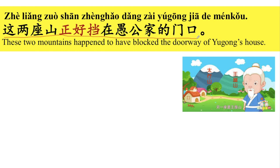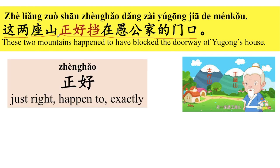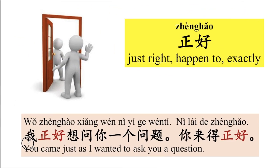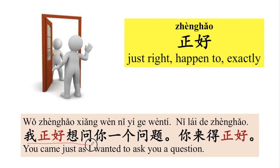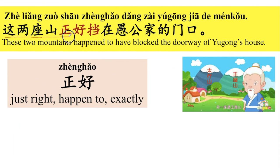这两座山正好挡在愚公家的门口。正好 means just right, happened to, exactly. For example, 我正好想问你一个问题，你来的正好。You came just as I wanted to ask you a question. 那这两座山正好挡在愚公家的门口。